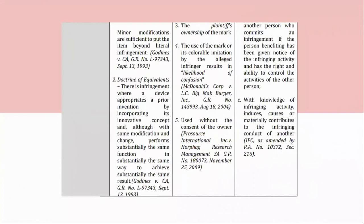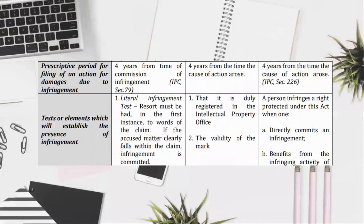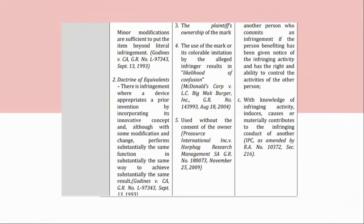Trademark infringement elements: (3) the plaintiff's ownership of the mark; (4) the use of the mark or its colorable imitation by the alleged infringer results in likelihood of confusion — McDonald's Corp v. L.C. Big Mac Burger, Inc., GR No. 143993, August 18, 2004; (5) used without the consent of the owner — ProSource International Incorporated v. Horfog Research Management S.A., GR No. 180073, November 25, 2009. Another person commits an infringement if the person benefiting has been given notice of the infringing activity and has the right and ability to control the activities of the other person; (c) with knowledge of infringing activity, induces, causes or materially contributes to the infringing conduct of another. IPC as amended by RA No. 10372, Section 200.